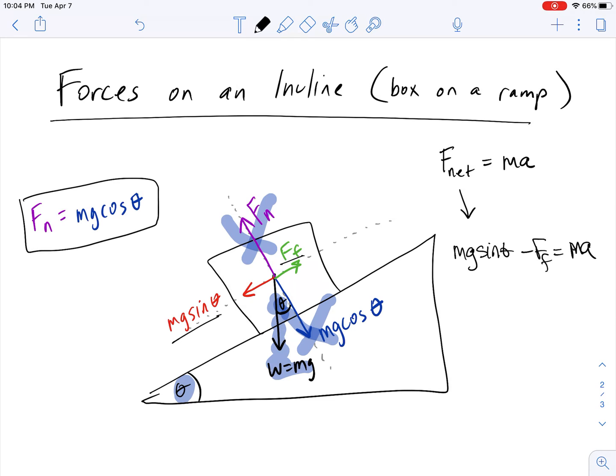And so that is how you would end up solving for the acceleration of the box as it's going down the ramp. If it were frictionless, then we would just kind of get rid of the friction force here and it would just be mg sine theta equals mass times acceleration.